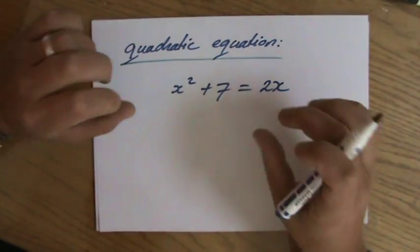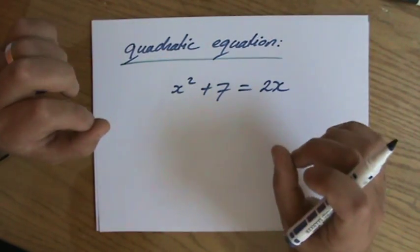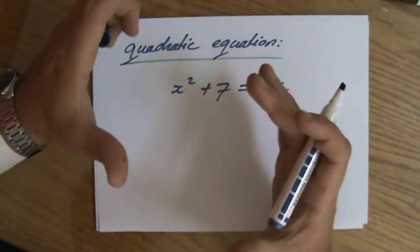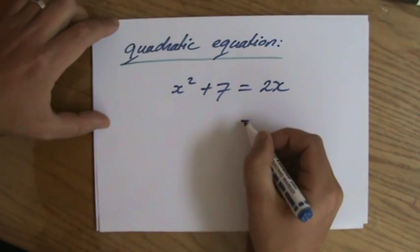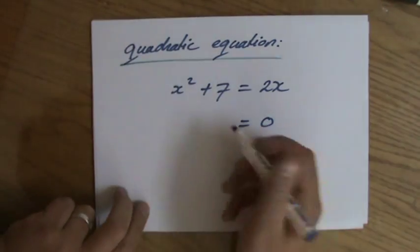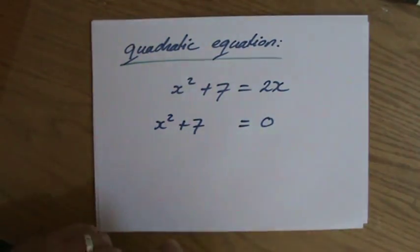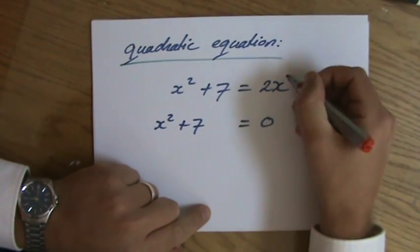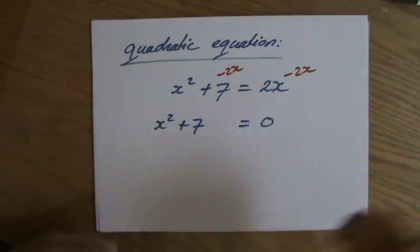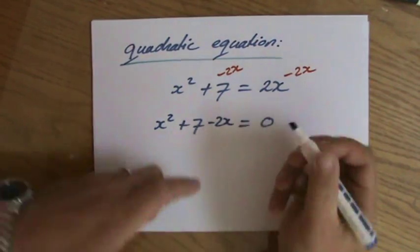What is the strategy? The strategy is always, with all three methods, to equal it to 0. So I have to rearrange the equation that it equals 0. Well, on my left side, I already have x squared plus 7. And then that 2x, for it to be removed on the right side, I have to take it away on the left side as well. Minus 2x. There we go. So I have equaled it to 0.